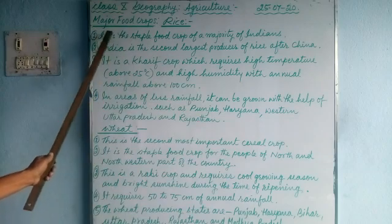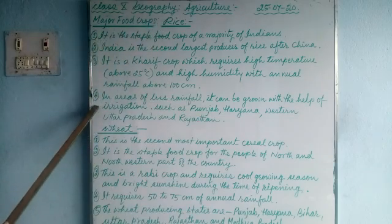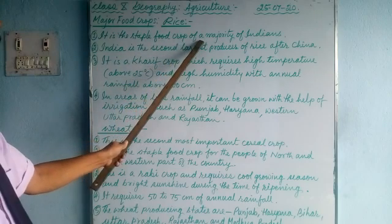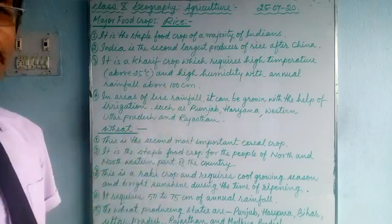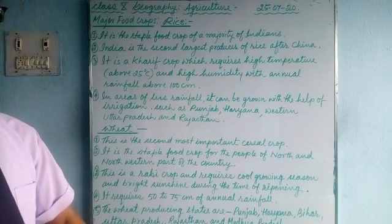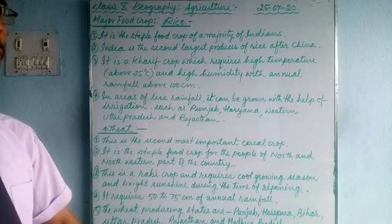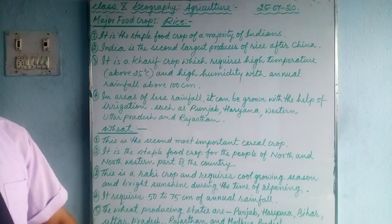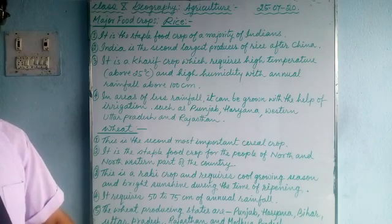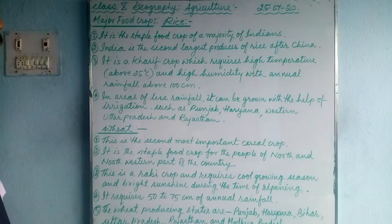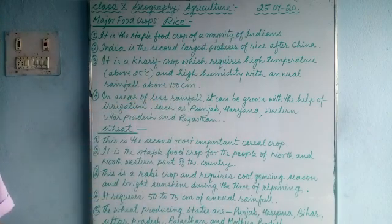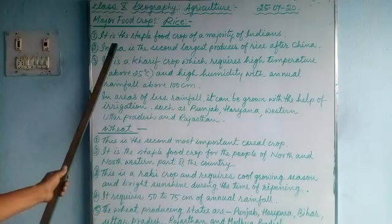Number one: rice. There are four points. Number one — it is a staple food crop of the majority of Indians. Most Indians like to eat rice — in some areas twice a day, in some areas three times a day, and sometimes once a day. It is the staple food crop of the majority of Indians.